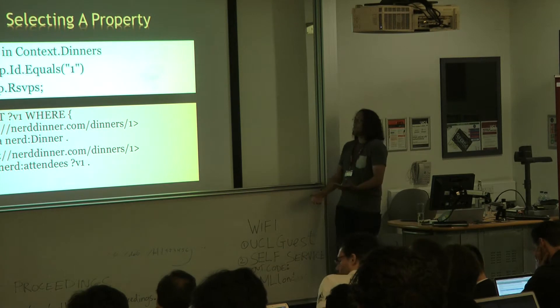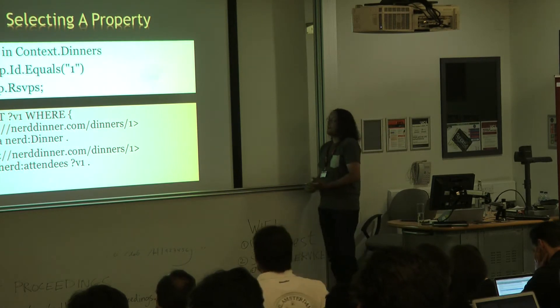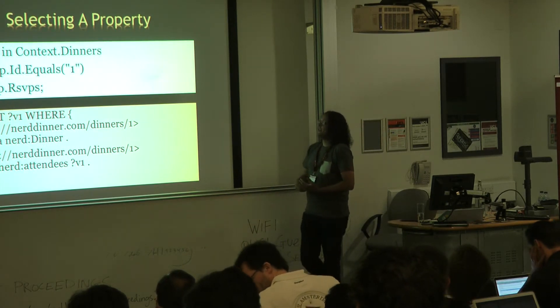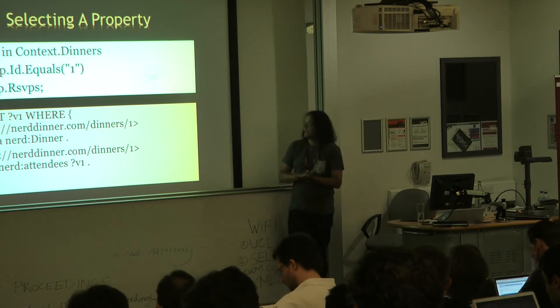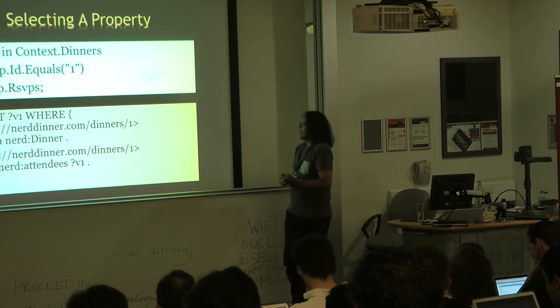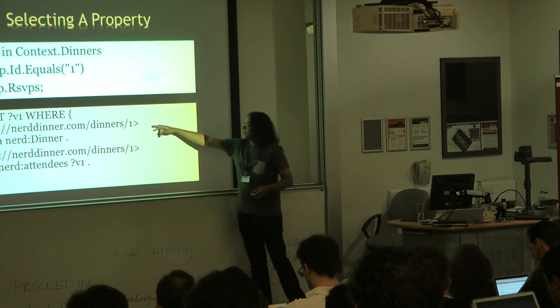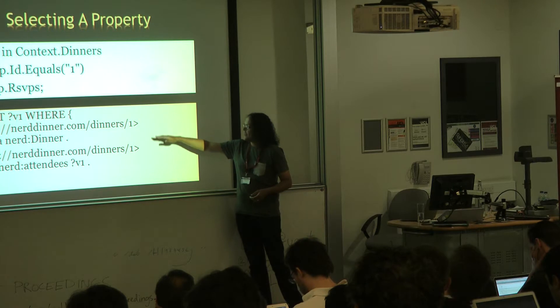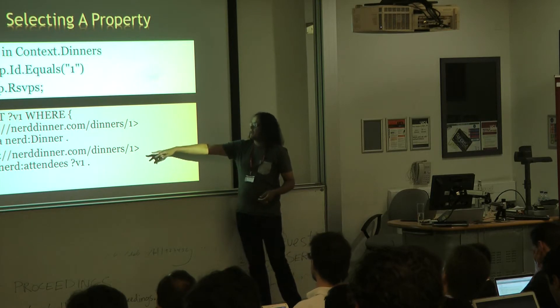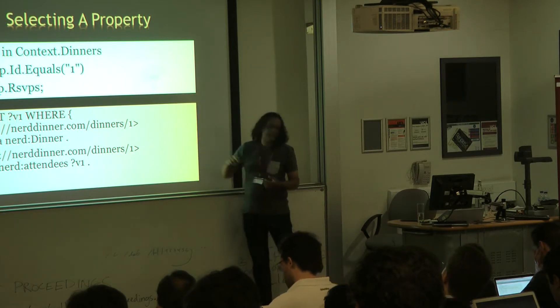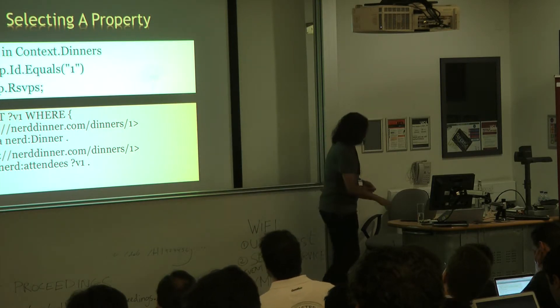So we can do things like selecting a property, as you would expect. So we want to say, for dinner number, with the ID of one, find all the RSVPs to the dinner, and that basically gets turned into a first selection that is just a type filter, and then a property navigation, we're going through to find the attendees, and basically we export that variable, and we bind that back out. So that's nice and easy.